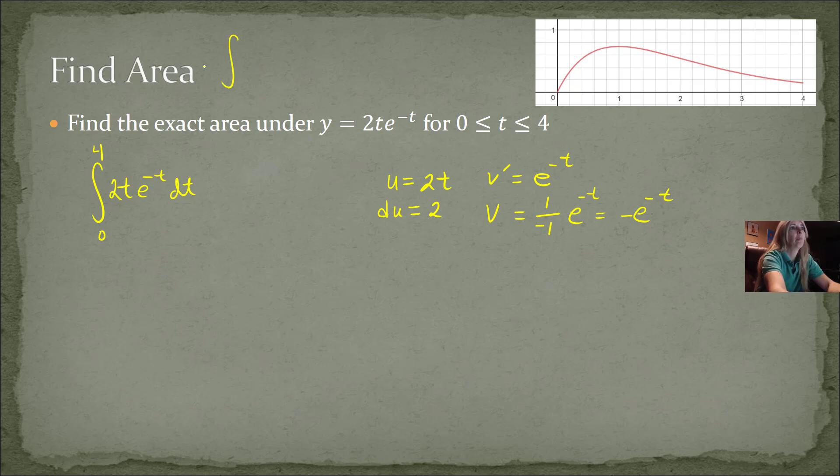So now I'm ready to write my uv minus integral of v du. So u is 2t, v is negative e to the negative t, minus the antiderivative of v, which is negative e to the negative t, and then du, which is 2, and then of course dt.